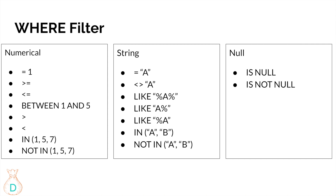LIKE '%A' with the percentage sign only in front returns strings that END with 'A'. You can also use IN and NOT IN for strings — for example, IN ('cat', 'dog') returns rows with either value. For NULL values, IS NULL returns all completely blank records — useful for diagnosing data quality issues. IS NOT NULL cleans your data by removing all null rows and addressing data quality problems.